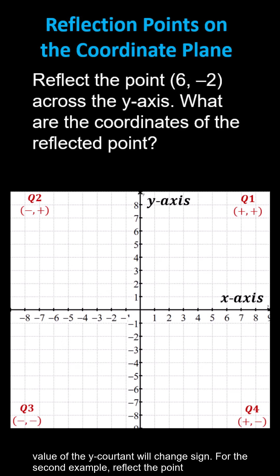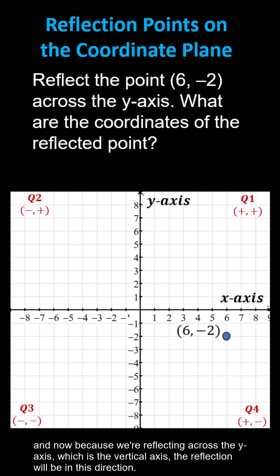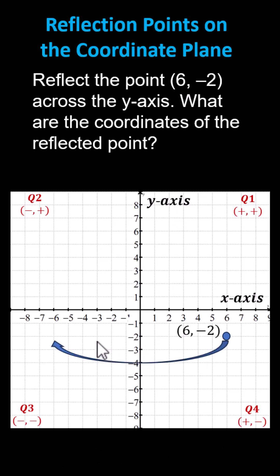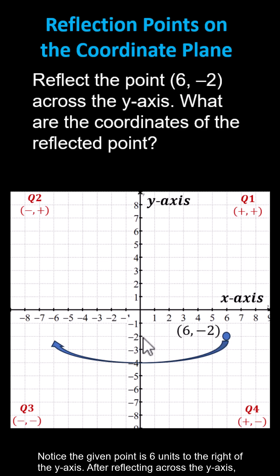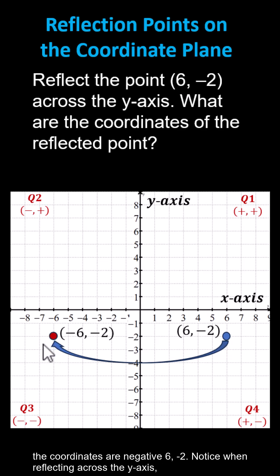For the second example, reflect the point 6 comma negative 2 across the y-axis. We first plot the given point 6 comma negative 2. And now because we're reflecting across the y-axis, which is the vertical axis, the reflection will be in this direction. Notice the given point is six units to the right of the y-axis. After reflecting across the y-axis, the reflected point will be six units to the left of the y-axis, this red point, where the coordinates are negative 6 comma negative 2.